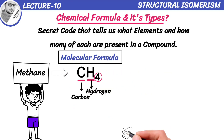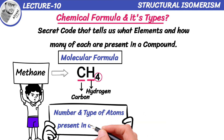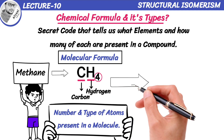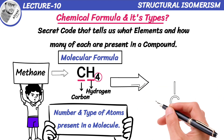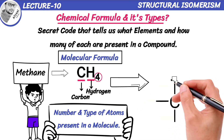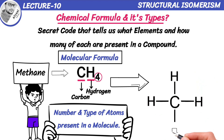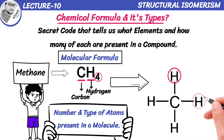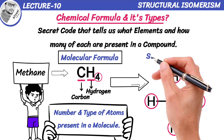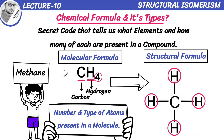Molecular formula is a type of chemical formula that tells us the number and type of atoms present in a molecule. Methane can also be represented in another way. This formula shows how atoms are connected within a molecule. For methane, we have 1 carbon atom bonded to 4 hydrogen atoms. The formula that shows the arrangement of atoms in a compound is known as structural formula.